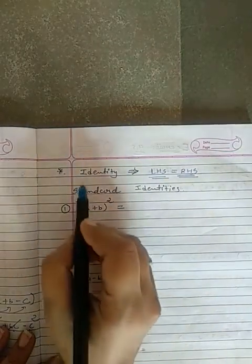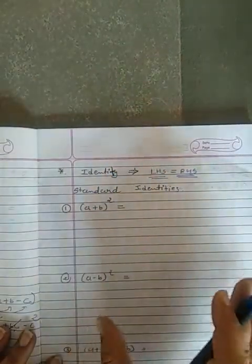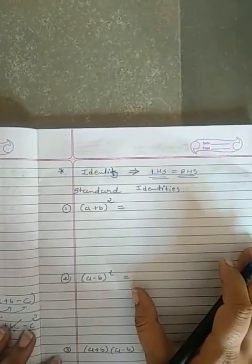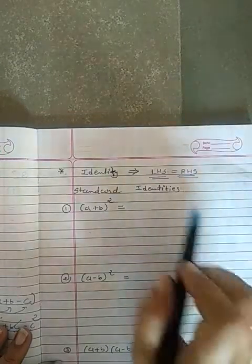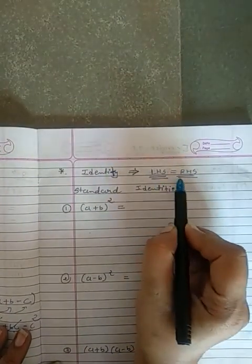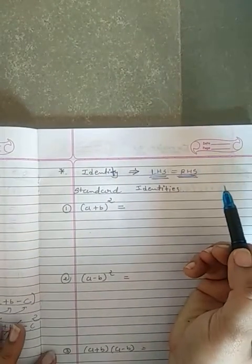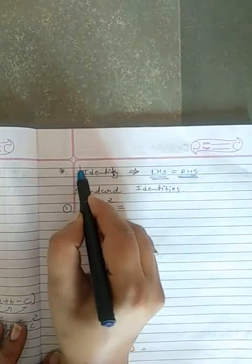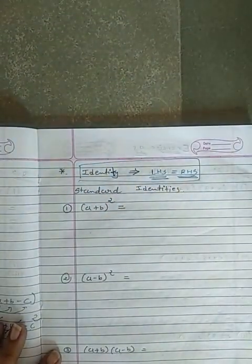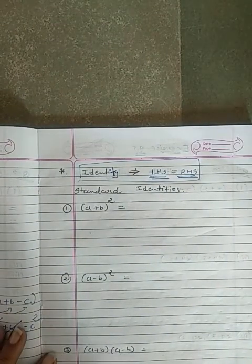Here is a note on identities: whenever your question says 'identify', you have to check that your left hand side is equal to right hand side. That is called an identity. So whenever your instruction says identify, you have to compare your left hand side with your right hand side.